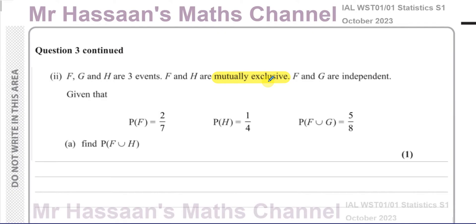Independent means where one outcome has no effect on the other. If you pick a ball from a bag, put it back, and pick again, the second pick is independent of the first. But if you don't replace it, the second pick is conditional on the first — not independent. Its probability will depend on what came out on the first pick: the number and colors of remaining balls will change, affecting the probability.